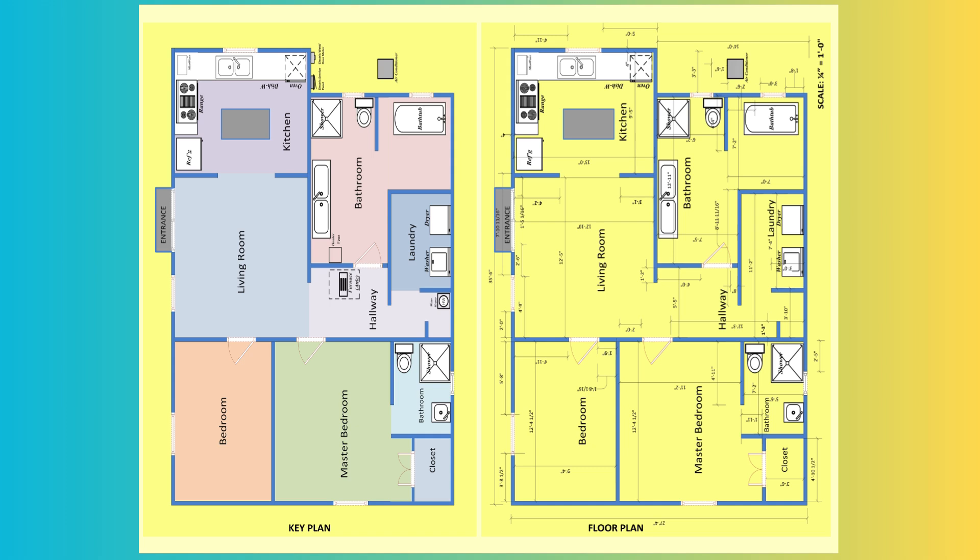These drawings depict two layouts of a residential property: a key plan and a floor plan. These key and floor plans offer a visual representation of the space, helping to strategically plan electrical components.